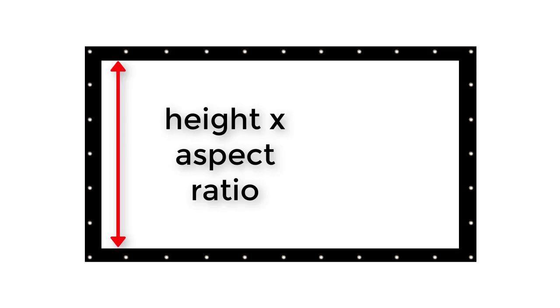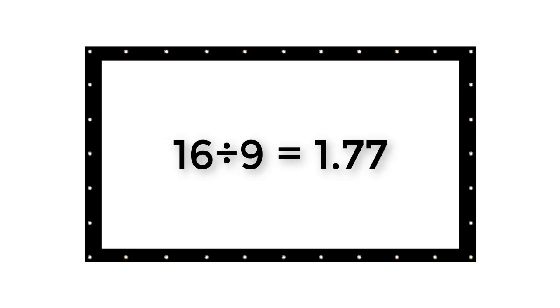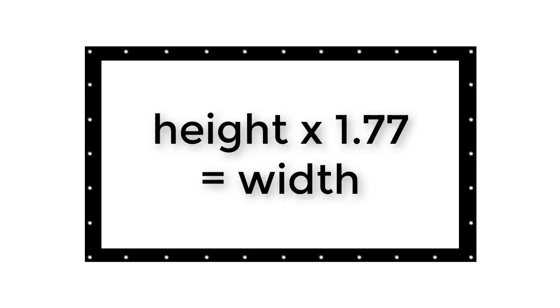Now, I bet most of you are saying, how do I multiply it by 16-9, 16-10, or a 4-3 aspect ratio? Well, that's easy too. 16-9 is a ratio or a fraction in itself. All you have to do is divide 16 by 9 and you come up with 1.77. Now, multiply the height by 1.77 and there's your display screen width.